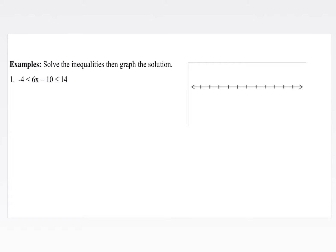Let's look at some more complex examples. We have negative 4 is less than 6x minus 10, which is less than or equal to 14. This is an 'and' compound inequality in the smushed format. Just like solving linear equations, what we do to one side we do to the other — but with inequalities we have multiple sides, so we need to do it to all sides. Feel free to draw vertical lines to separate the different sides.